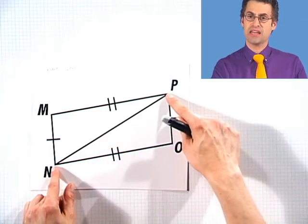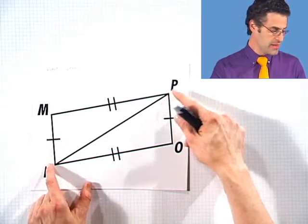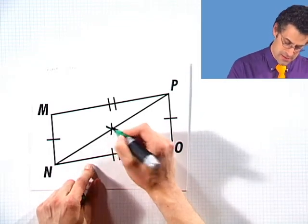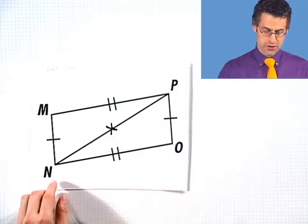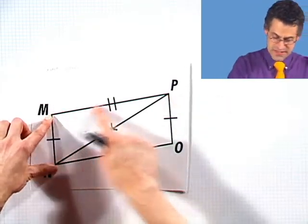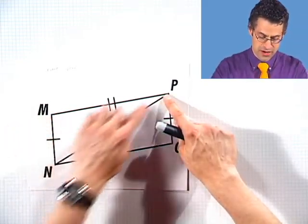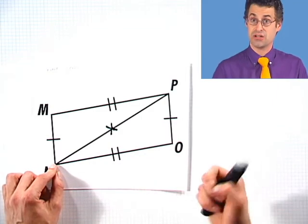Since NP, that line segment, is congruent to itself—every line segment is congruent to itself—then I know that this line segment is congruent to itself. Therefore, all the corresponding sides are congruent: this side of this triangle is congruent to that side of this triangle, this side is congruent to this side, and this side is congruent to this side, since that side is the identical object. So these two triangles are congruent by side, side, side.